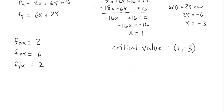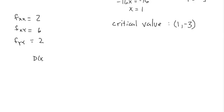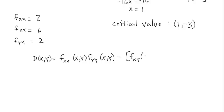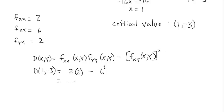Now we run the second derivative test: D(x,y) = f_xx · f_yy − (f_xy)². Evaluating at (1, −3), since all second-order partials are constants, we don't need to substitute. So D(1, −3) = 2 · 2 − 6² = 4 − 36 = −32. Since −32 < 0, we have a saddle point.